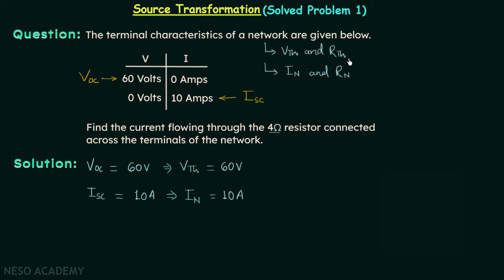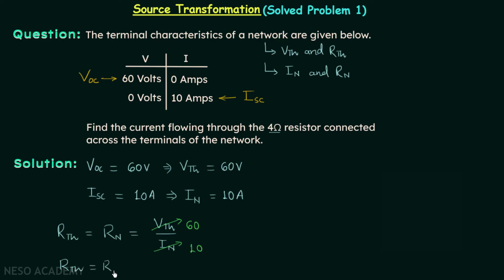Now we find Rth and Rn. Both are equal and are calculated as Vth divided by In. Vth is 60 volts and In is 10 amperes, so Rth and Rn are both equal to 6 ohms. We now have Vth and Rth for the Thevenin's equivalent circuit, and In and Rn for the Norton's equivalent circuit.